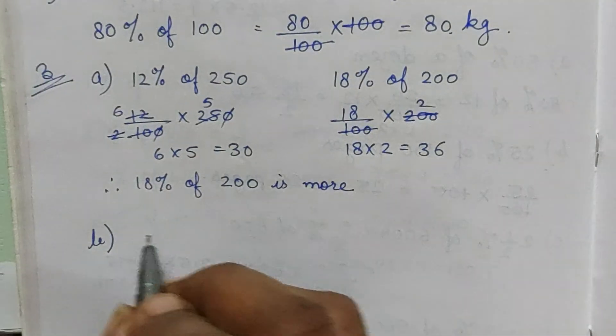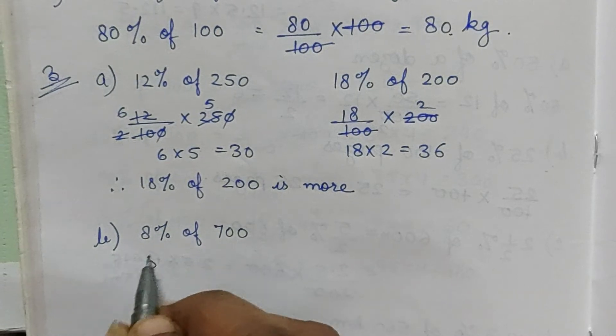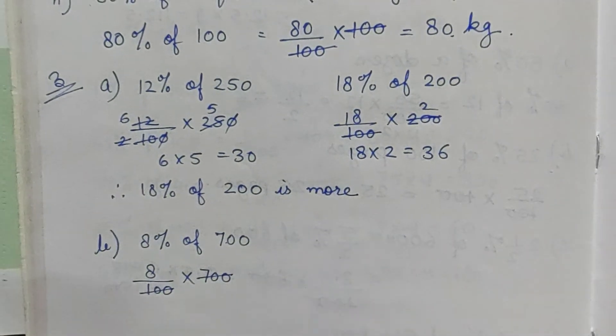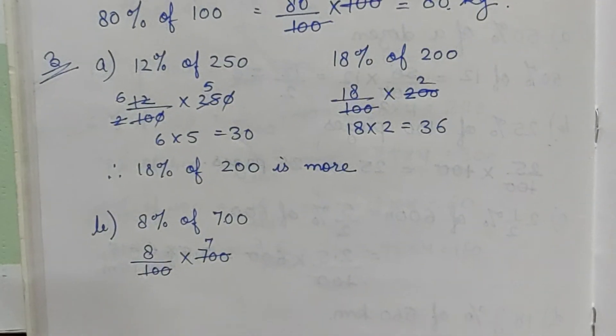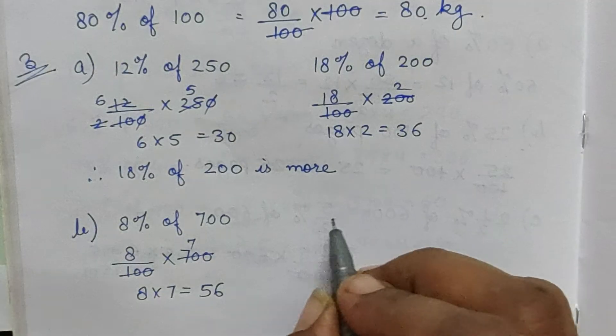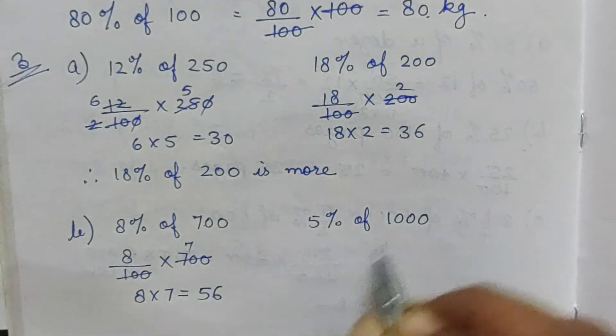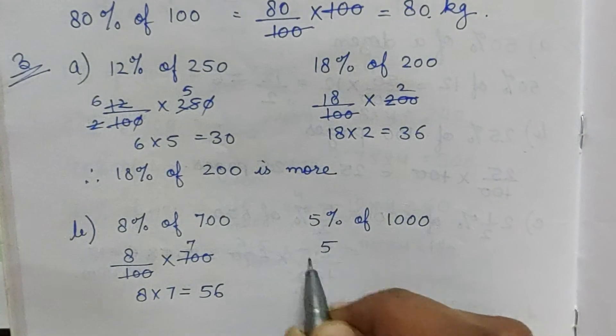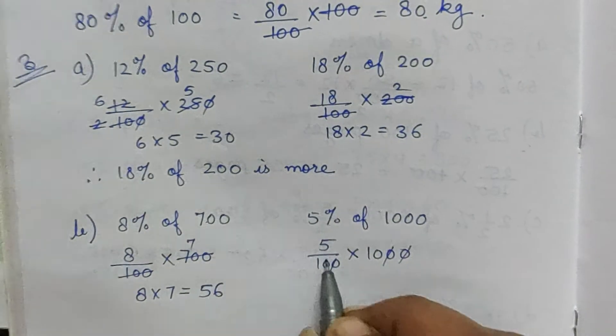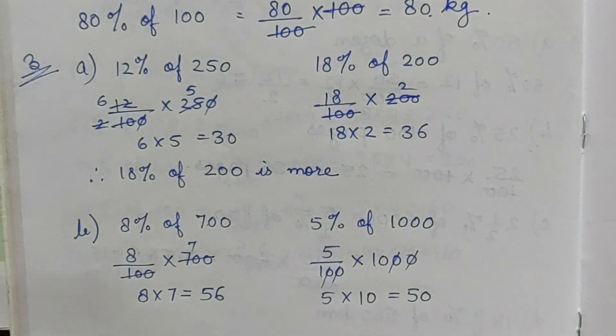Part b: 8% of 700. 8 by 100 into 700. 8 into 7 equals 56. And 5% of 1000, so 5 by 100 into 1000. 5 into 10 equals 50. So 56 is more than 50, therefore 8% of 700 is more.